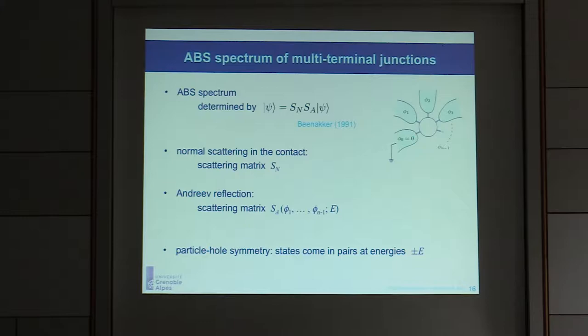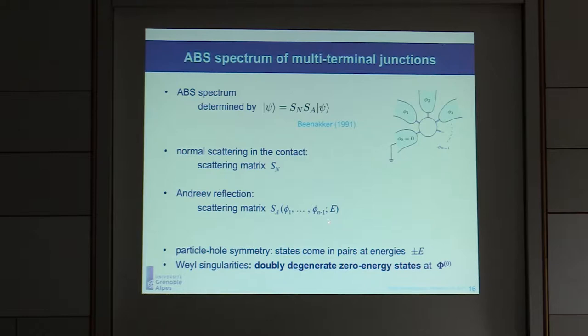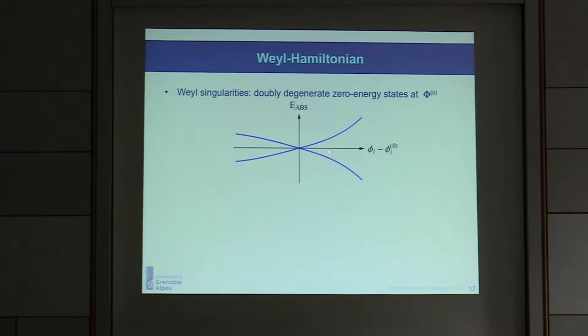With spin rotation invariance and time reversal symmetry plus particle-hole symmetry, all states come in pairs at energies plus and minus E. If you want to look at a state at zero energy, it's not a single state but a crossing of two states. So you have to find where you get a doubly degenerate solution of the equation determining the eigenspectrum. This is quite different from the Majorana case — here we are talking about conventional superconductors.